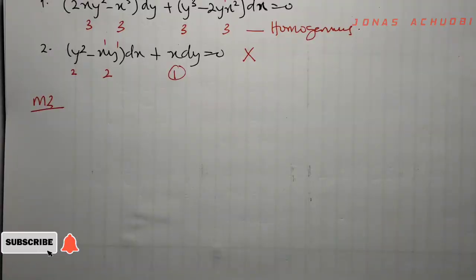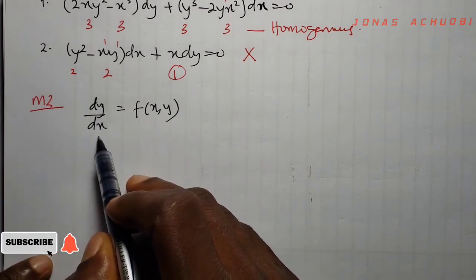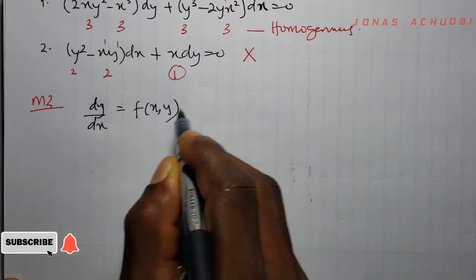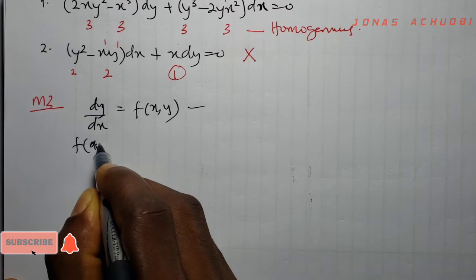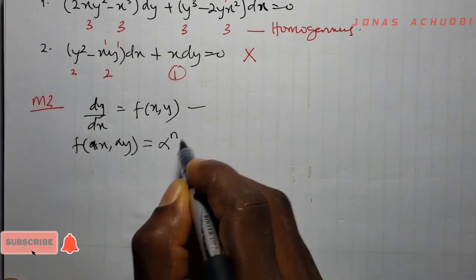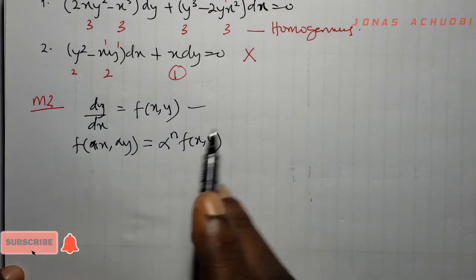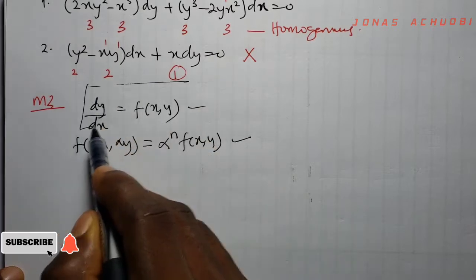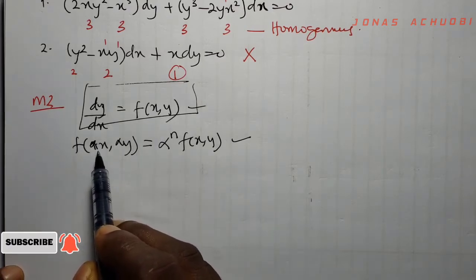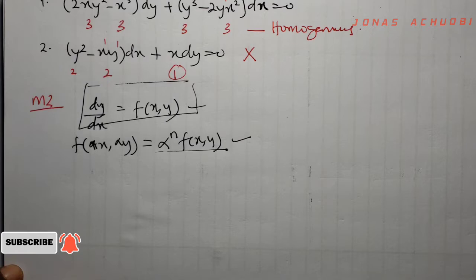Another method of checking if an ODE is homogeneous is the following. Consider the differential equation dy/dx = f(x, y). If we introduce a variable alpha and form f(αx, αy), and we are able to write this as αⁿ · f(x, y), where n is any number including 0, then the differential equation is homogeneous. We introduce alpha into the right-hand side, and if we can factorize αⁿ out in this form, the equation must be homogeneous.